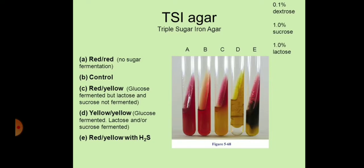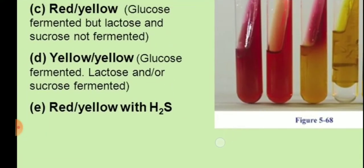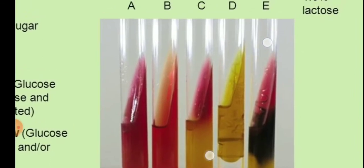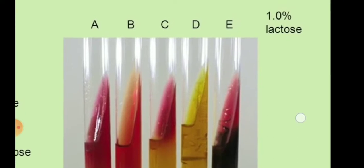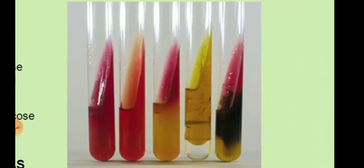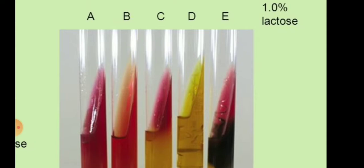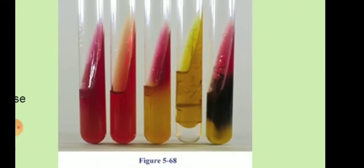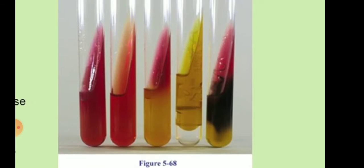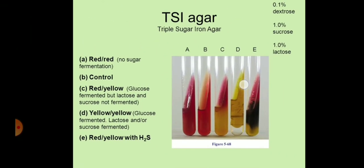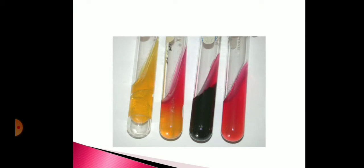On triple sugar iron (TSI) agar slant, E. coli ferments both sugars. Look at tube D: both the slant and the butt are yellow in color, indicating acid production. E. coli also produces gas — you can see that the agar has lifted at the bottom, creating a gap occupied by gas. There is no H2S production; if H2S were produced, blackening of the medium would occur. So E. coli shows acid and gas production in both slant and butt, with no H2S.